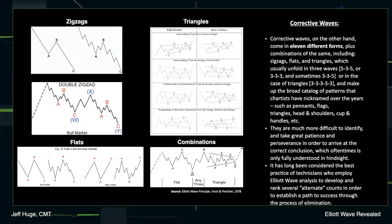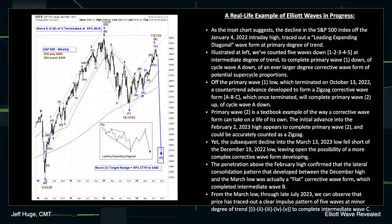We'll get more into the rules and guidelines around these corrective waveforms as we do some live analysis. What I'd like to do is take you to the current market condition. As you can see in the chart, we've basically taken the August 14th midday weekly chart, looking back a little over three years to the March 2020 lows, which we marked as primary wave four of cycle wave five. We basically identified the breakout above the prior wave B high as being a final leg to cycle wave five — in other words, primary wave five up of cycle wave five up to complete super cycle wave three.